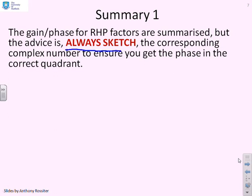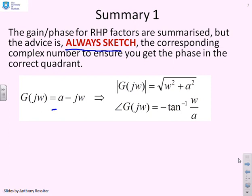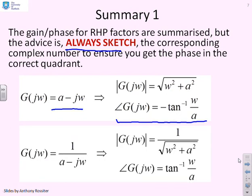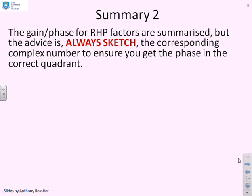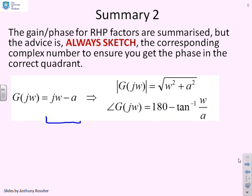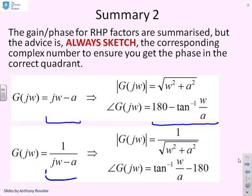Summary: if we have a factor a - jω in the numerator, the phase is -tan⁻¹(ω/a). If we have 1/(a - jω) in the denominator, the phase is +tan⁻¹(ω/a). If we have jω - a in the numerator, the argument is 180 - tan⁻¹(ω/a). And if we have 1/(jω - a), the phase is tan⁻¹(ω/a) - 180. However, it is not recommended to memorise these formulas — it is much more reliable to do the sketch and work it out each time.